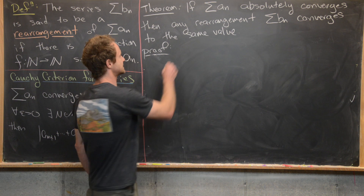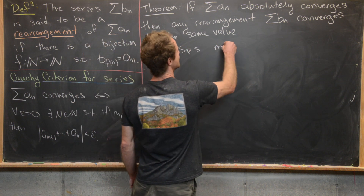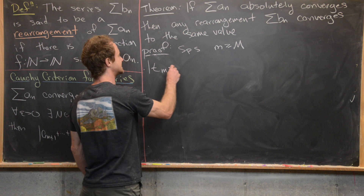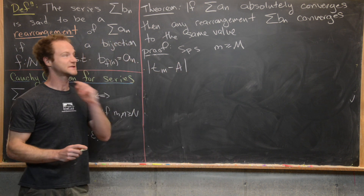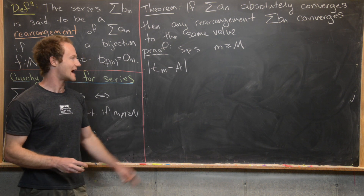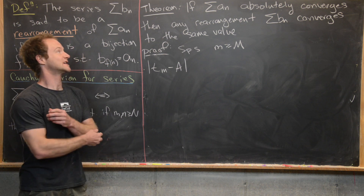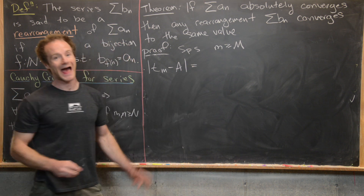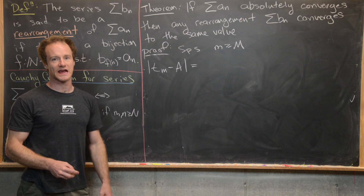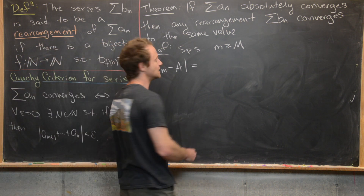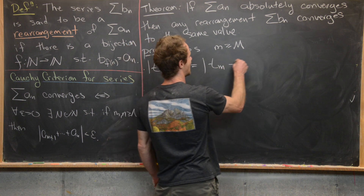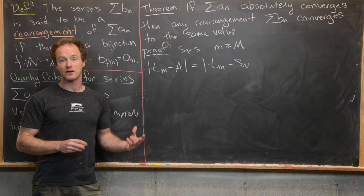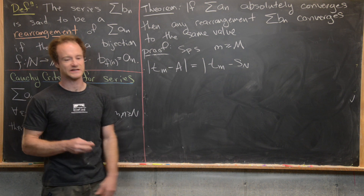Now we're ready to finish the proof. Suppose that little M is greater than or equal to capital M that we just constructed, and consider the absolute value of T sub M minus A. Hopefully that is less than epsilon — that would show us exactly that the sum of B_N equals capital A, just as the sum of A_N does. We add zero inside the absolute value in the form of S sub capital N, giving us |T sub M minus S sub capital N plus S sub capital N minus A|.